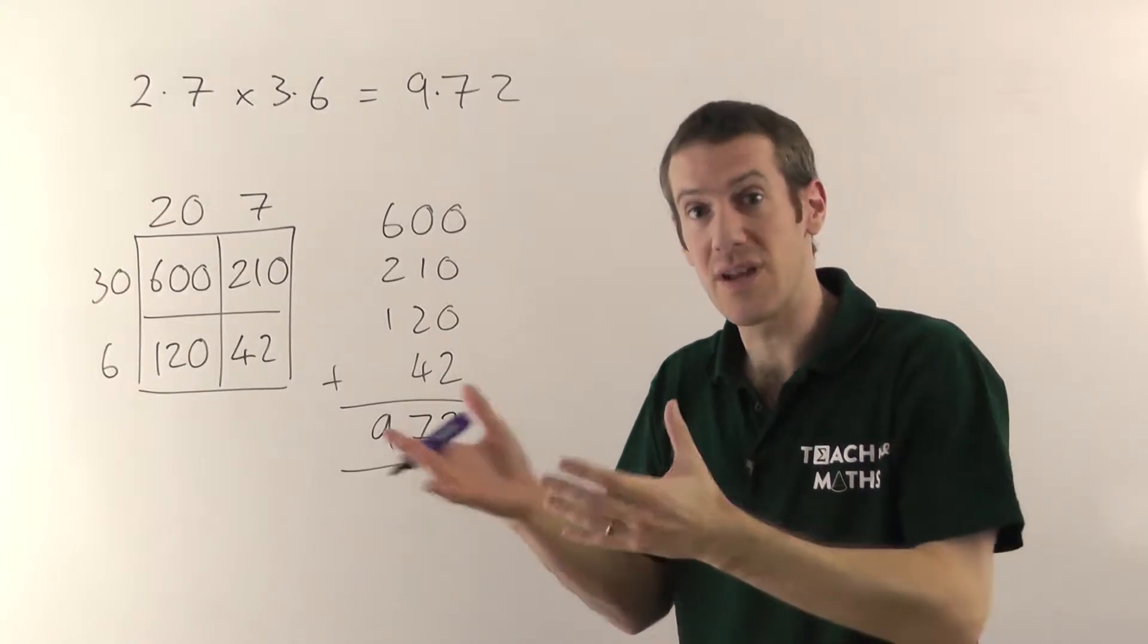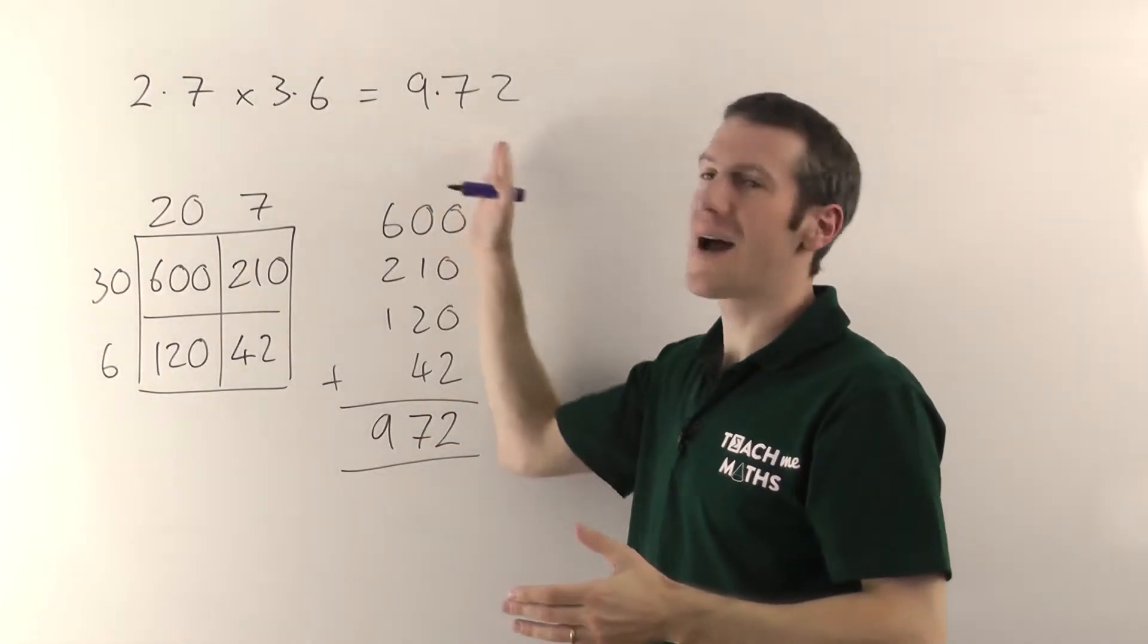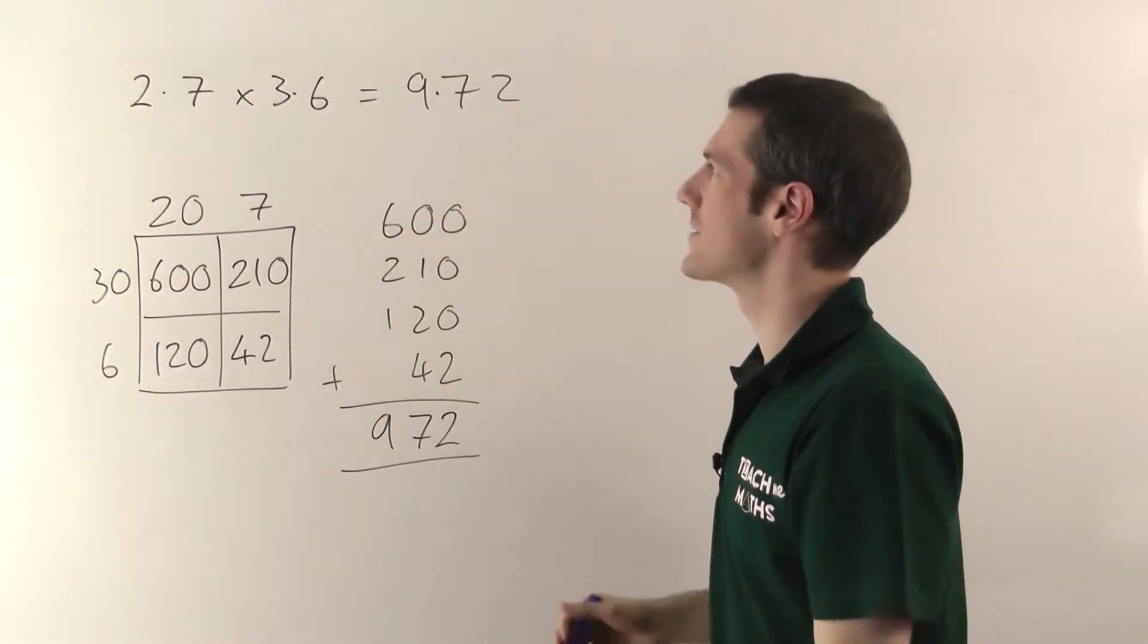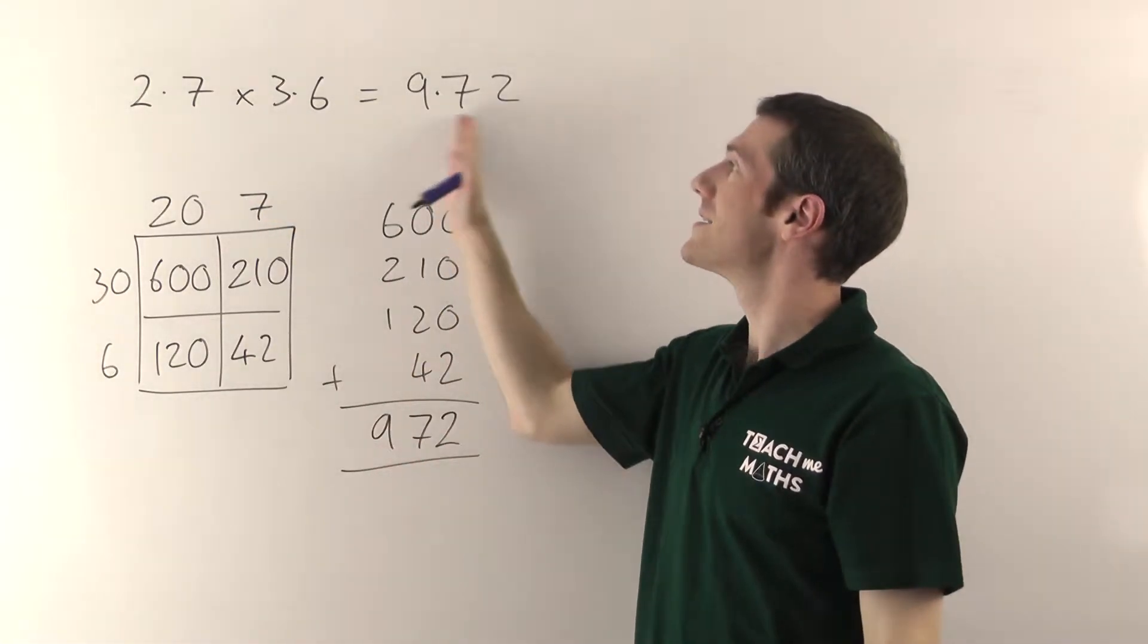That does rounding in terms of how you round the decimal places, but it'll talk about how you figure out how many there should be and things like that. So 2.7 times 3.6 is 9.72.